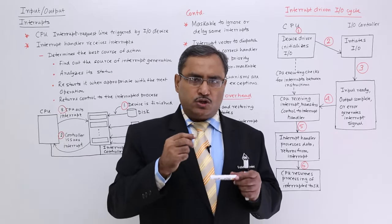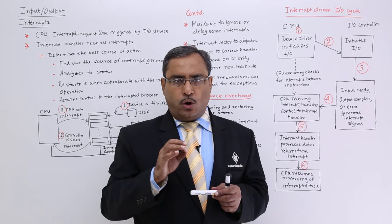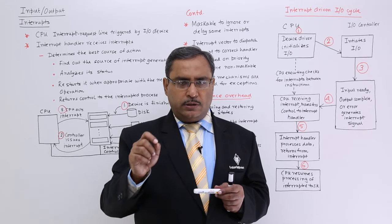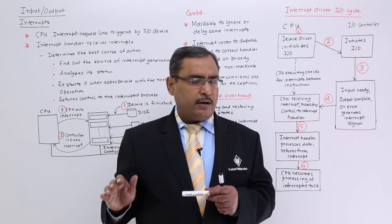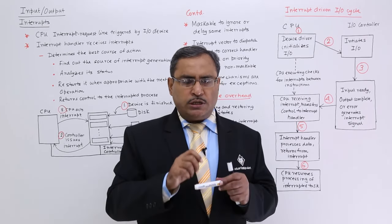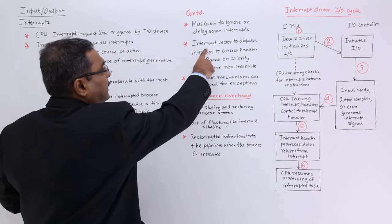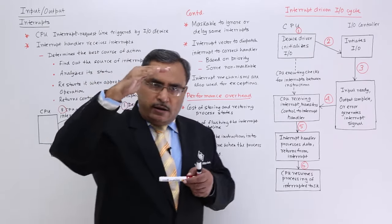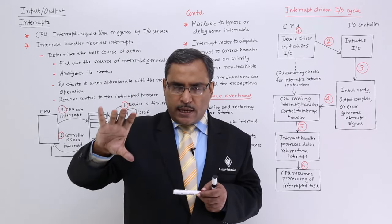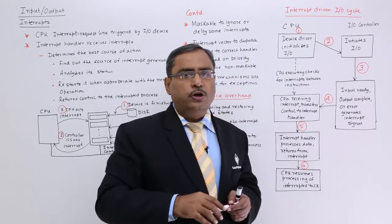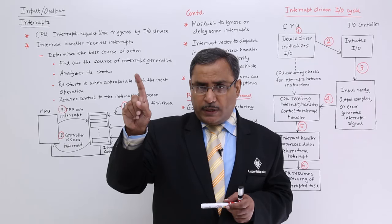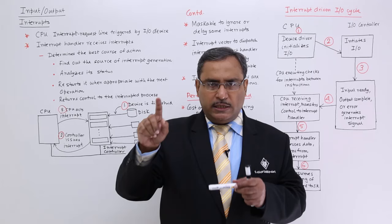Interrupts can be of two types: maskable and non-maskable. A non-maskable interrupt means the system is bound to pay attention to it and cannot be ignored. A maskable interrupt, if masked by the system, will remain transparent to the CPU. The interrupt vector table dispatches the interrupt to the correct handler — it contains jump or go-to instructions pointing to different interrupt handler routines, each ending with a return instruction that transfers control back to the suspended process.